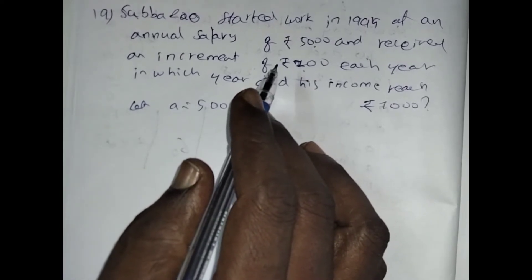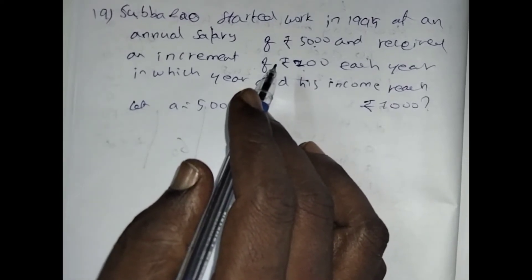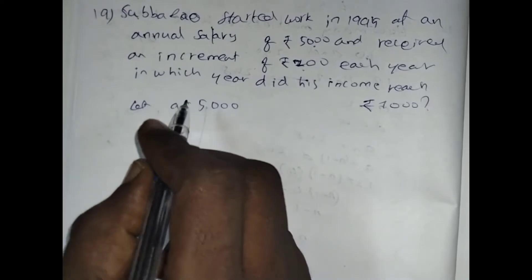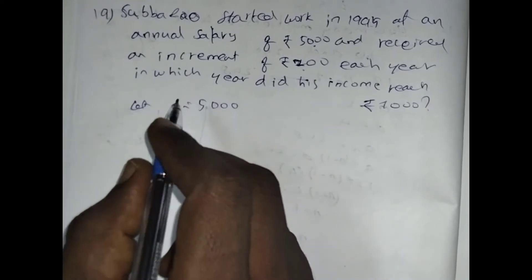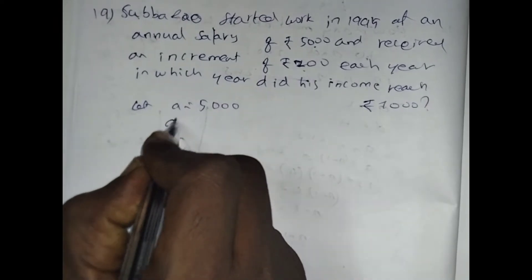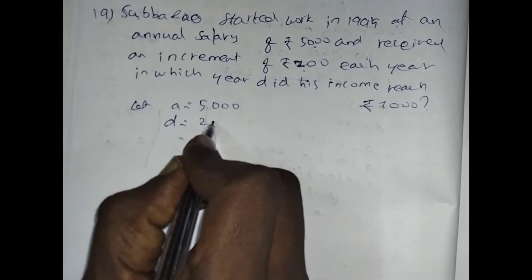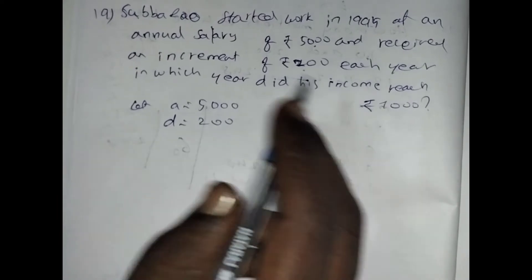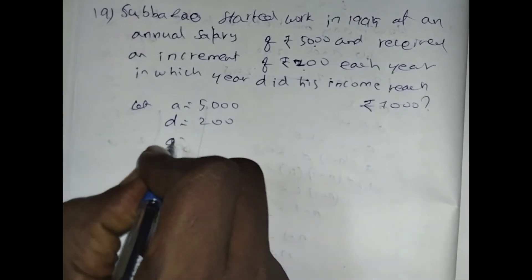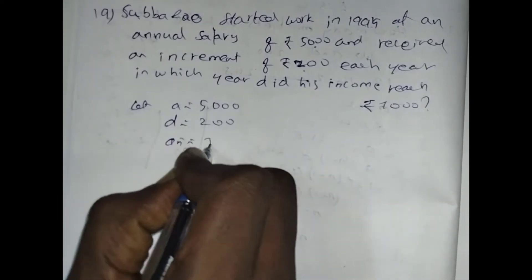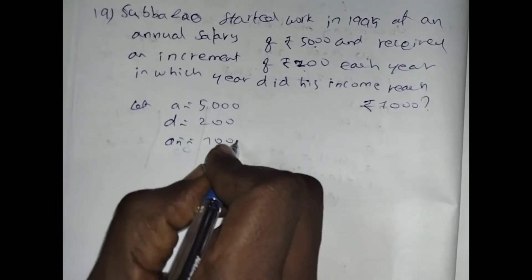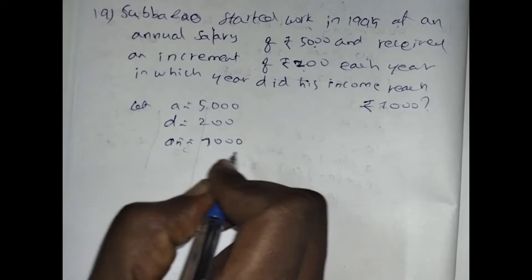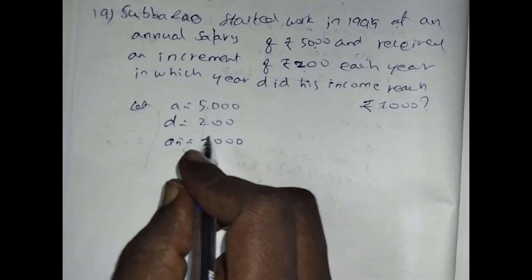That means D should be general for all the terms: first term minus second term equals third term minus second term. So the common differences are equal. Here D is 200. It becomes 7000, that means AN equals 7000. We are asked to find how many years it takes to get 7000.